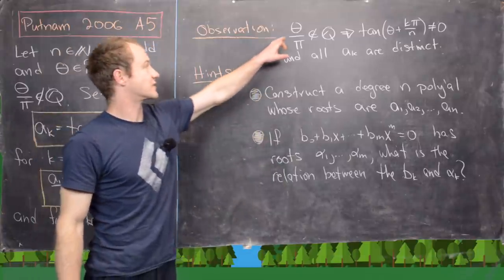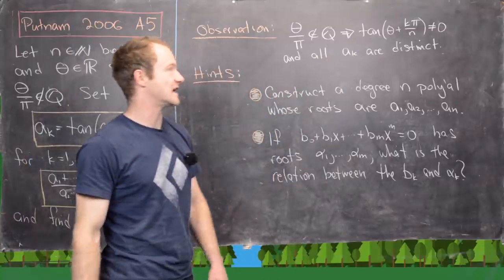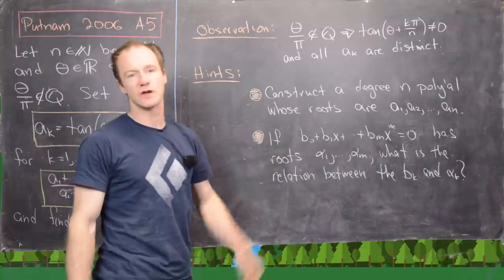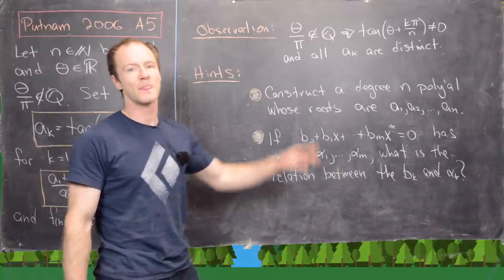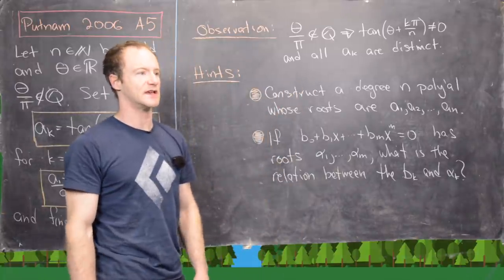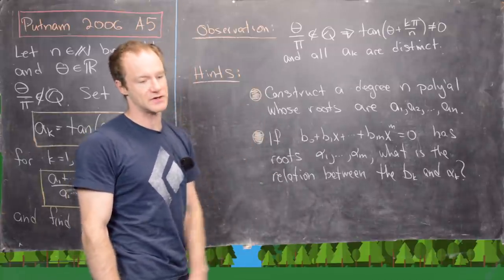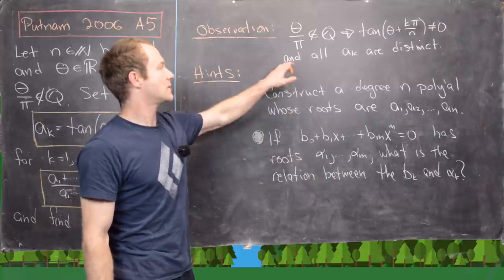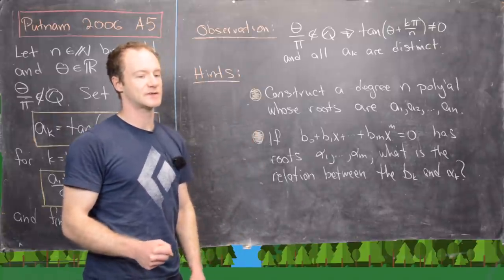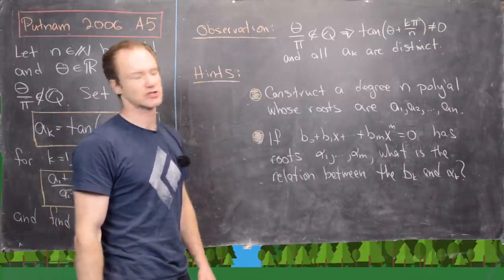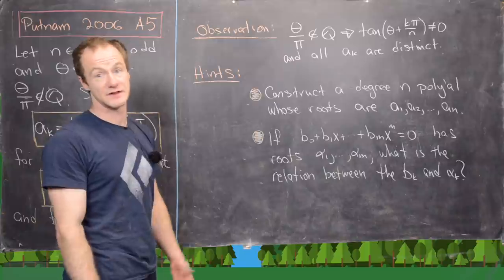Here's a key observation. The condition that θ/π is irrational implies that tan(θ + kπ/N) is never equal to zero — that's easy to check because we know the zeros of tangent. It's also never undefined, so it's always in the domain. Furthermore, all the A_k are distinct, because we know the periodicity of the tangent function.